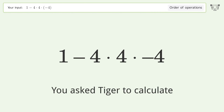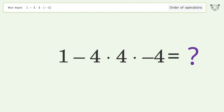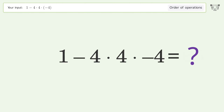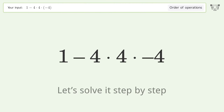You asked to calculate this. It deals with the order of operations — the final result is 65. Let's solve it step by step.